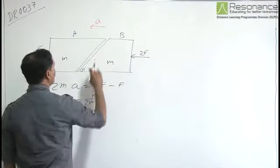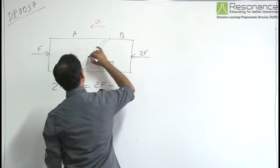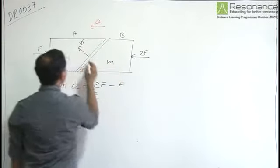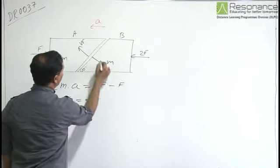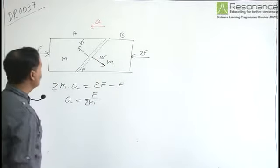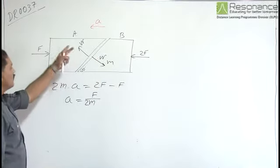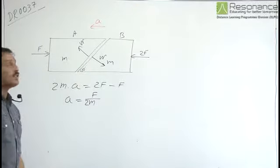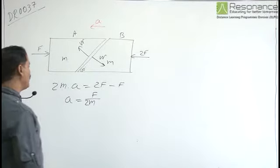Now let us assume B is exerting a normal reaction on A and A is exerting a normal reaction on B. To get the normal reaction, we can solve for either of the blocks.